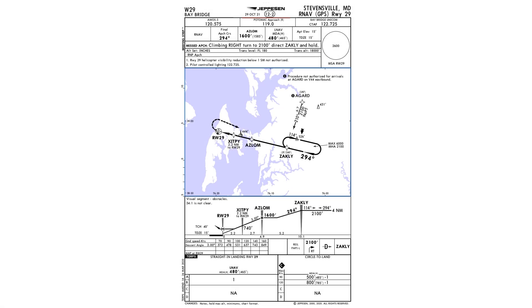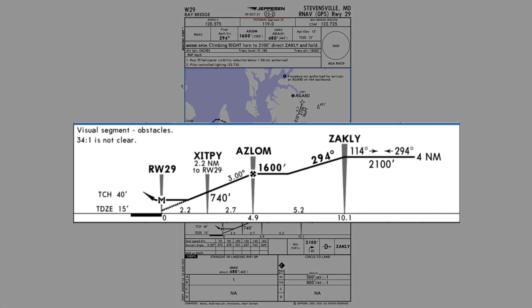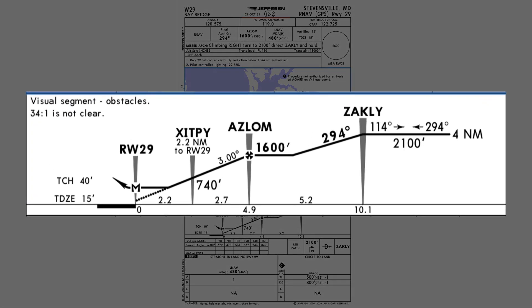It's produced by Jeppesen and provided to GPS manufacturers. It's computed based on the FAA's vertical descent angle from the threshold crossing height. Jeppesen approach plates will include a dashed line down to the missed approach point that indicates a vertical descent angle — here, it's computed as 3 degrees.